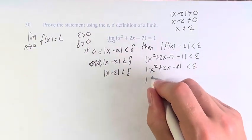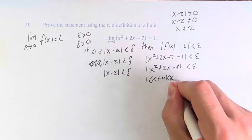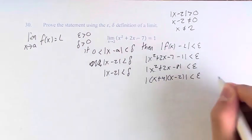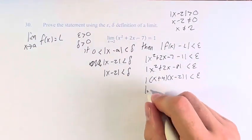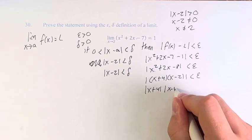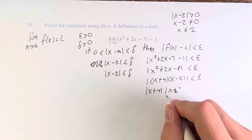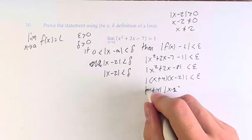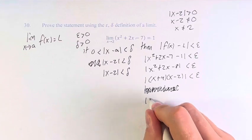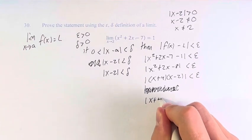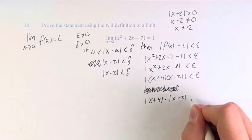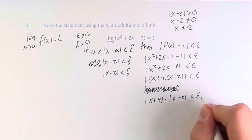Factoring x squared plus 2x minus 8, we get x plus 4 times x minus 2. Therefore, the absolute value of x plus 4 times the absolute value of x minus 2 is less than epsilon.